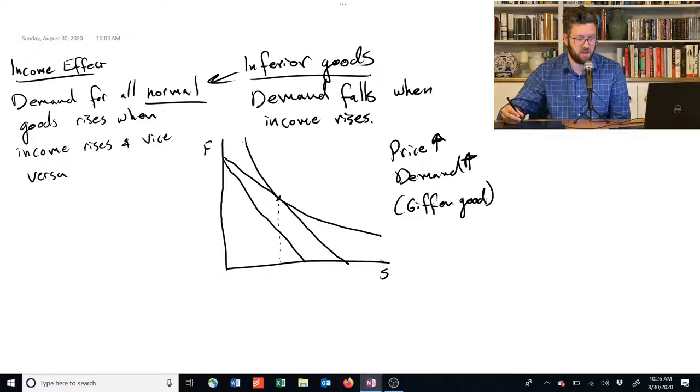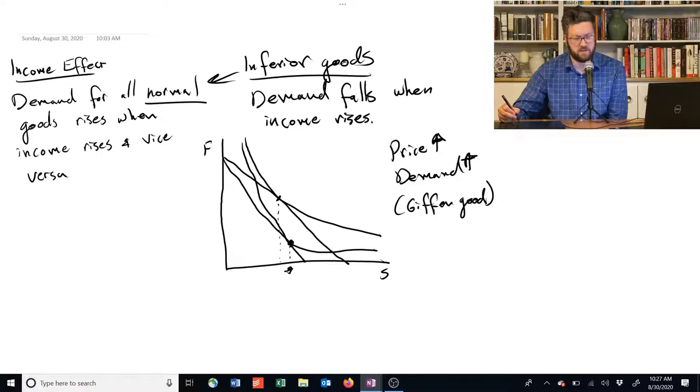And if we draw a certain kind of preference curve with this kind of shape, then it's possible that we end up over here. So what's going on in this case?